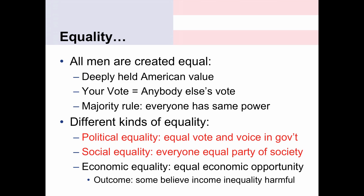There is a deeply ingrained American value of equality — the notion that all men and women are created equal. This is as much a political idea as anything. The idea is that your vote is equal to everybody else's vote, which is the basis for majority rule. Majority rule only makes sense if everybody has the same power, so everybody has one vote and the same voice. There are a lot of different types of equality, and we're going to talk about three of them, two of which will be very important when we talk about the civil rights movement.